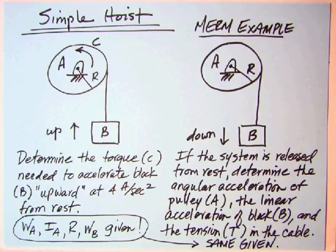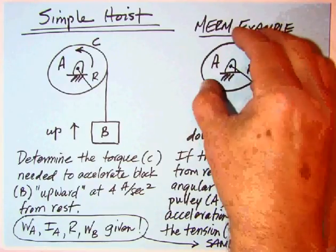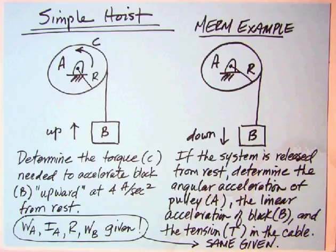The first thing to do is to draw free body diagrams, and in dynamics you always separate the systems, you never leave them together. Let's look at a free body of pulley A and the free body of block B and apply Newton's laws of motion.